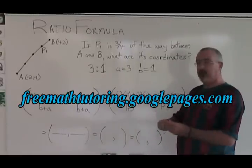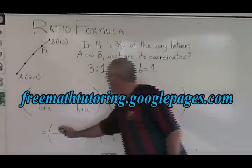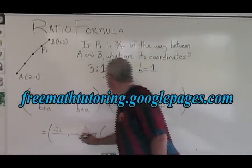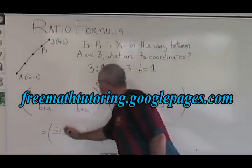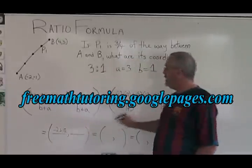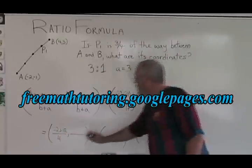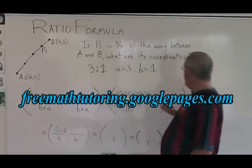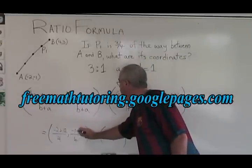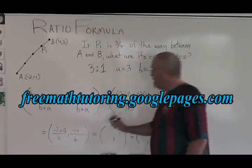Now we just have to simplify this. 1 times -2 is -2, plus 3 times 4 is 12. The bottom, 1 plus 3, is 4. On this side, 1 plus 3 is still 4. 1 times -1 is -1, plus 3 times 3 is 9.